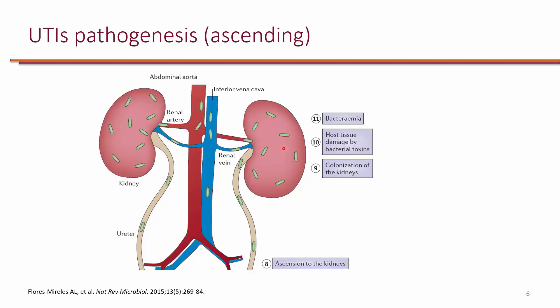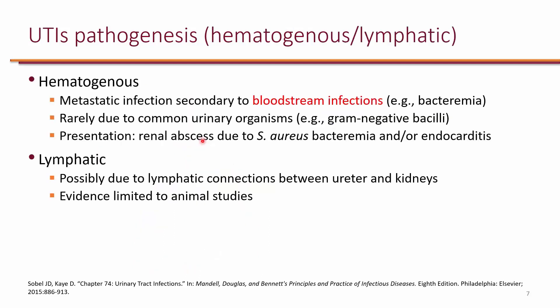Because of the abundant vasculature in the nephrons, bacteria can easily enter the blood, leading to bacteremia. In general, there are three ways to get a urinary tract infection: the ascending pathway from the gut through the urethra to the bladder and kidneys; the hematogenous route, where bacteria from a bloodstream infection travel through the blood to the kidneys and then to the bladder; and the lymphatic pathway, which is less common and supported mainly by animal studies.